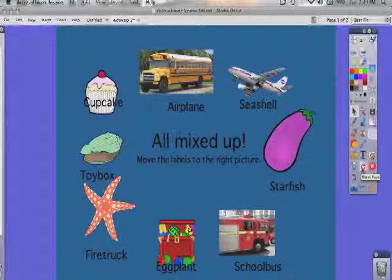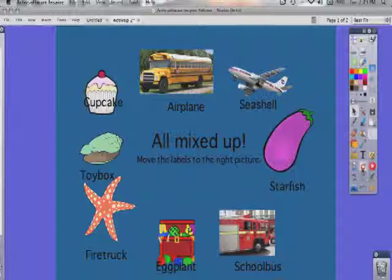For example, teachers can create an activity such as this page with all the labels in the wrong place. Students would come up and try and place the labels in the correct place.